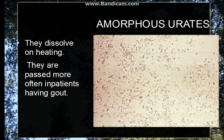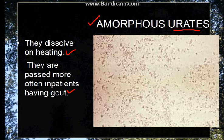Now going to amorphous urates. Amorphous means they don't have a particular morphology — they just give a cloudy appearance to the urine specimen. Urates, if present, dissolve on heating, and they are seen in some patients suffering from gout. There is also amorphous phosphates, which dissolve on addition of acetic acid.